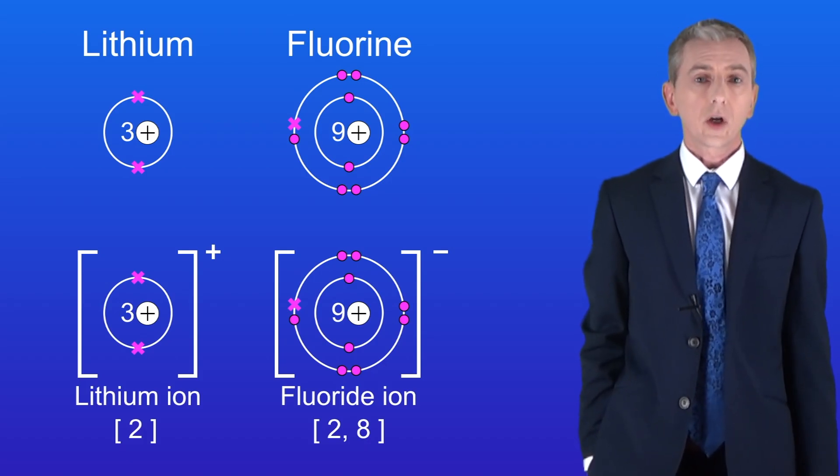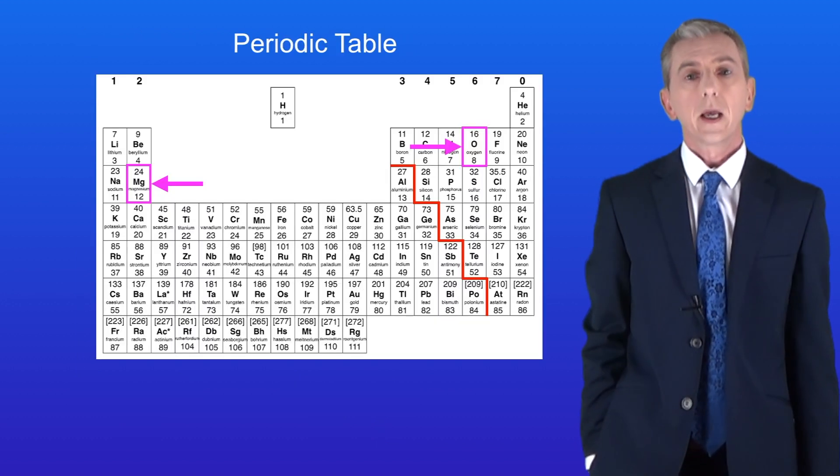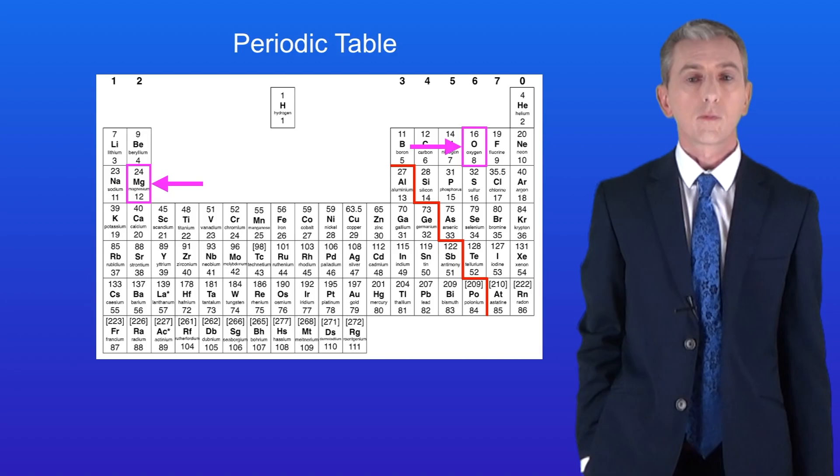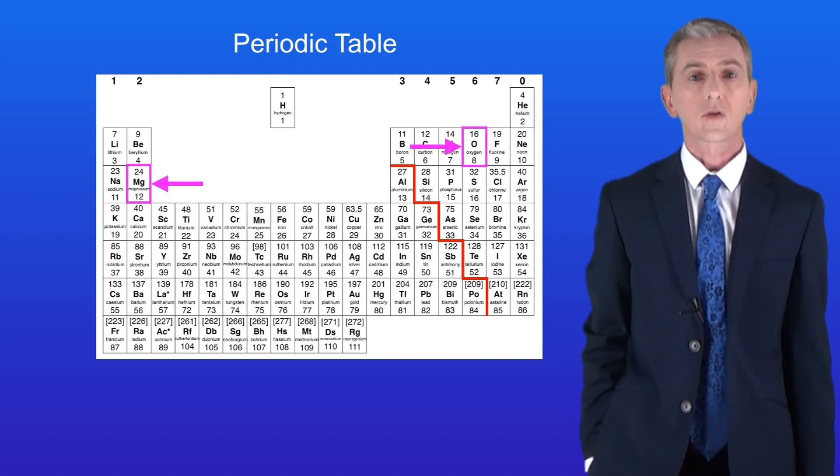So in this video we're looking at ionic bonding between a group 2 metal and a group 6 non-metal. A good example is the reaction between the group 2 metal magnesium and the group 6 non-metal oxygen.